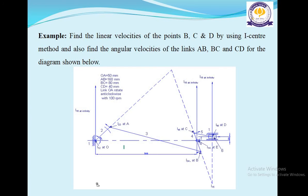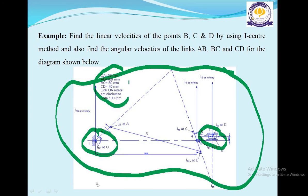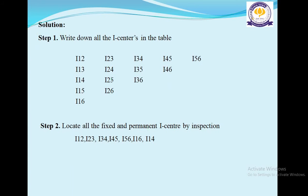Here you can see the figure. In this figure, the fixed link and slider are shown. OA equals 50 mm, AB is 160 mm, BC is 180 mm, CD is 40 mm. Link OA rotates anticlockwise at 100 RPM. Solution: